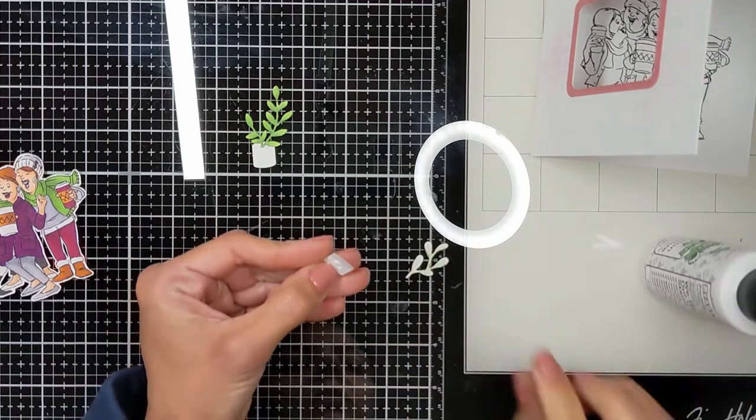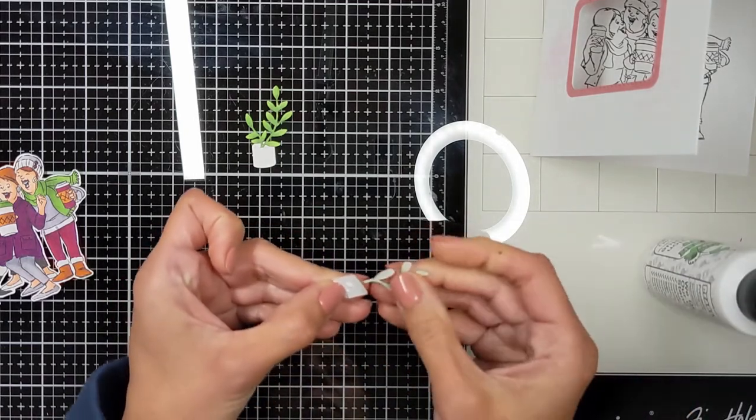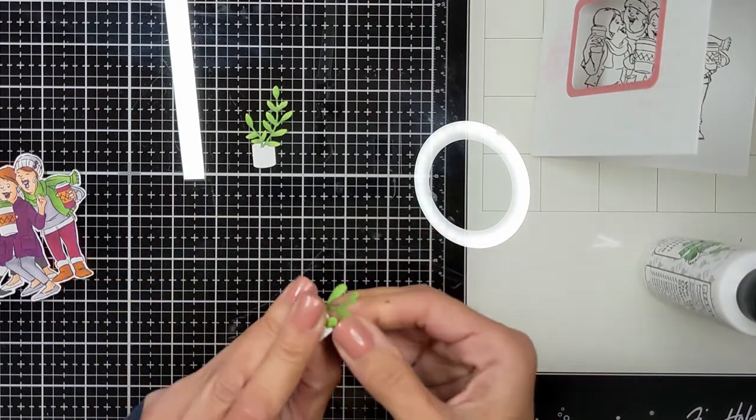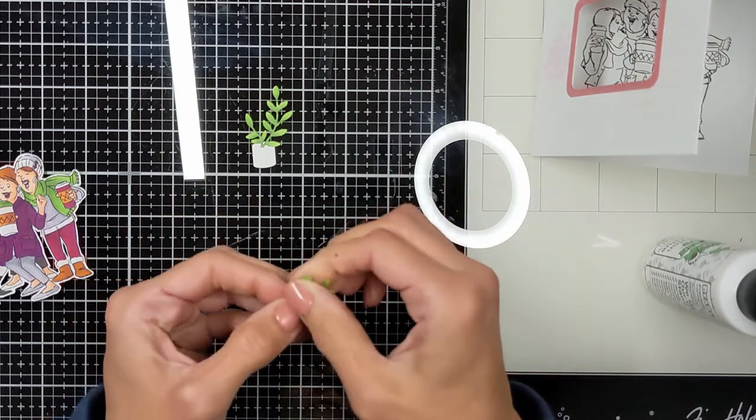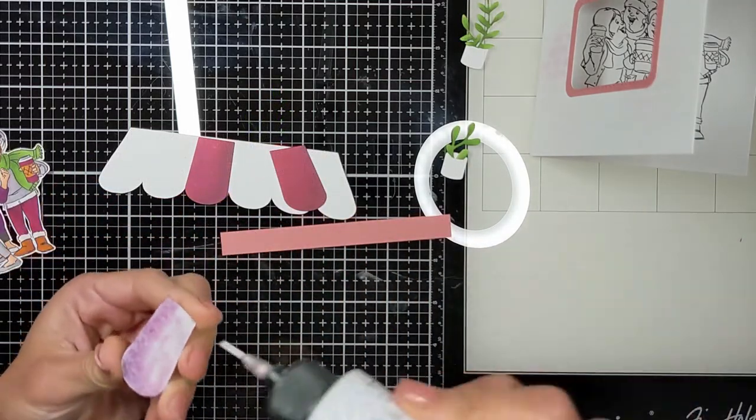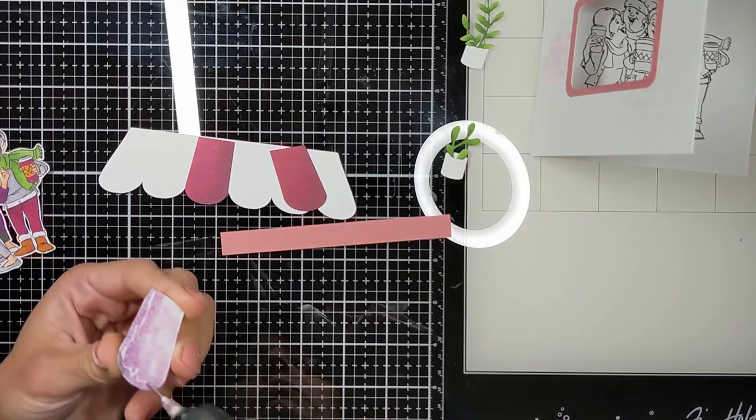The amazing thing about this marshmallow die is I could not find any other pot that matches what I want that is that small. All the pot dies I had were so big, so this marshmallow was just perfect. The die cuts a slit so you can easily put your leaves inside.